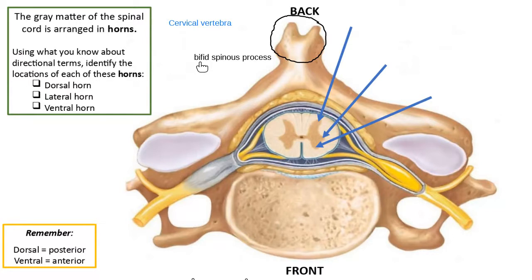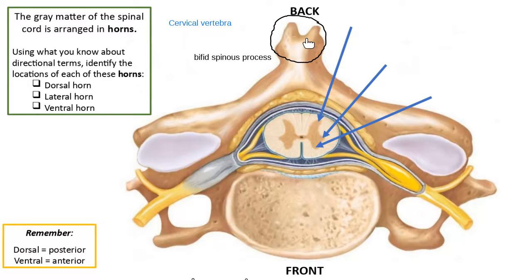A bifid spinous process has two branches, as opposed to other vertebrae where it's just one bony landmark. So when you look at a vertebra and see two parts to its spinous process, that's a bifid spinous process — it has branches. Cervical vertebrae are the only kind that have this bifid spinous process. Spinous processes are always found on the dorsal or back side, because that's the part you feel when you're feeling your spine.